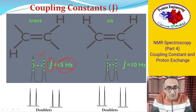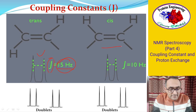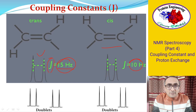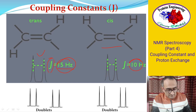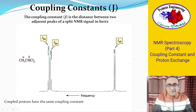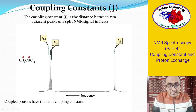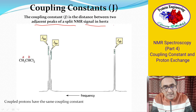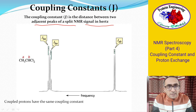Whereas in the case of the cis compound the distance is 10 Hz. So by looking at the distance between peak splits one can differentiate between cis and trans compounds. The coupling constant J is defined as the distance between two adjacent peaks of a split NMR signal, measured in hertz.